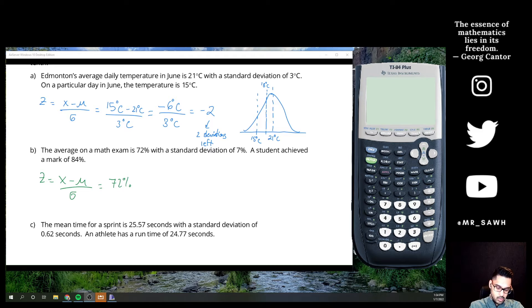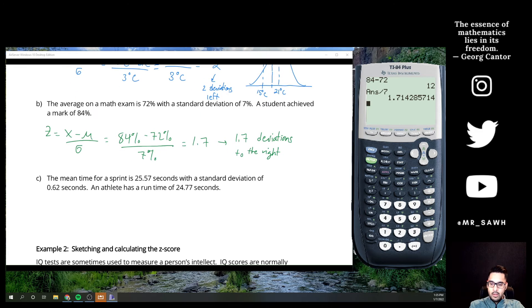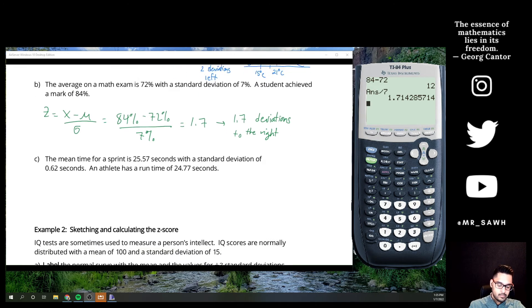84% minus the average of 72, divide by my deviation of 7. So 84 minus 72, divide by 7. Nearest tenth, 1.7. So I know from that number we are 1.7 deviations to the right. Okay, so if it's positive, I know that this value is higher than the average, which makes sense. Their mark is greater, and I know exactly where it will be on this standardized scale.